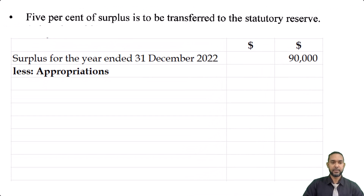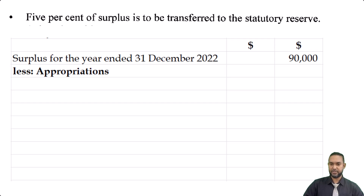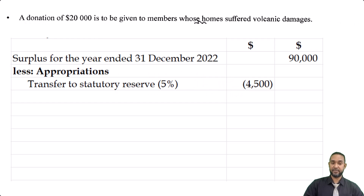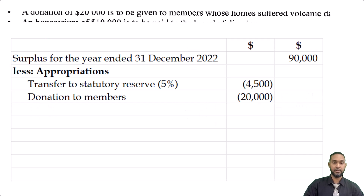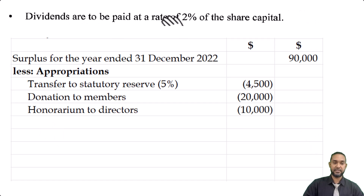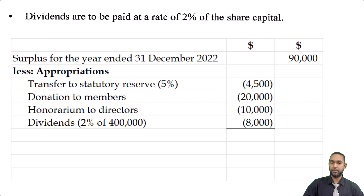Then put 'less appropriations.' In order of appearance: 5% of the surplus is to be transferred to the statutory reserve, so 5% of $90,000 is $4,500. Next, a donation of $20,000 is to be given to members whose homes suffered volcanic damages — that's a straight $20,000. Honorarium of $10,000 is to be paid to the board of directors. And dividends at 2% which we found as $8,000. Adding all those up gives $42,500.